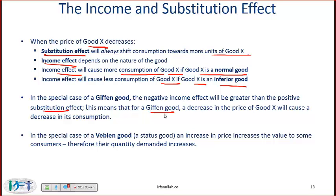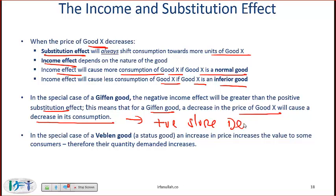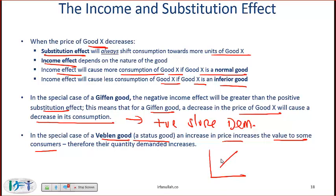For a Giffen good, a decrease in the price of good X will cause a decrease in its consumption, resulting in a positively sloped demand curve. In the special case of a Veblen good, also called a status good, an increase in price increases the value to some consumers, therefore their quantity demanded increases. Giffen goods and Veblen goods both have positively sloped demand curves, but for very different reasons.